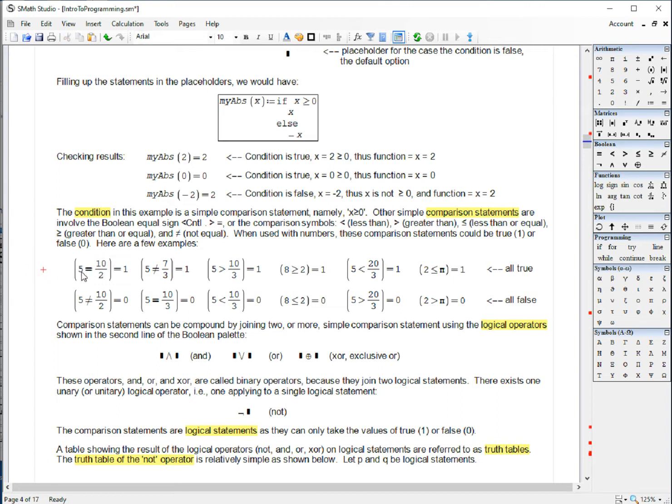And I put in parentheses, but basically I would say, is five equal to ten over two? That is true. So I get a number one. In logical operations in SMS Studio, true is represented by the number one, false by the number zero.